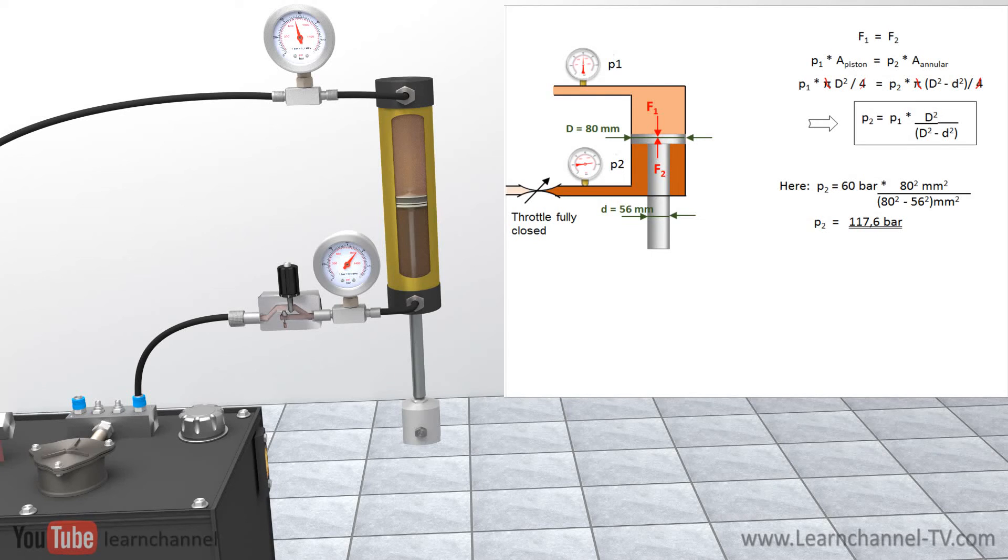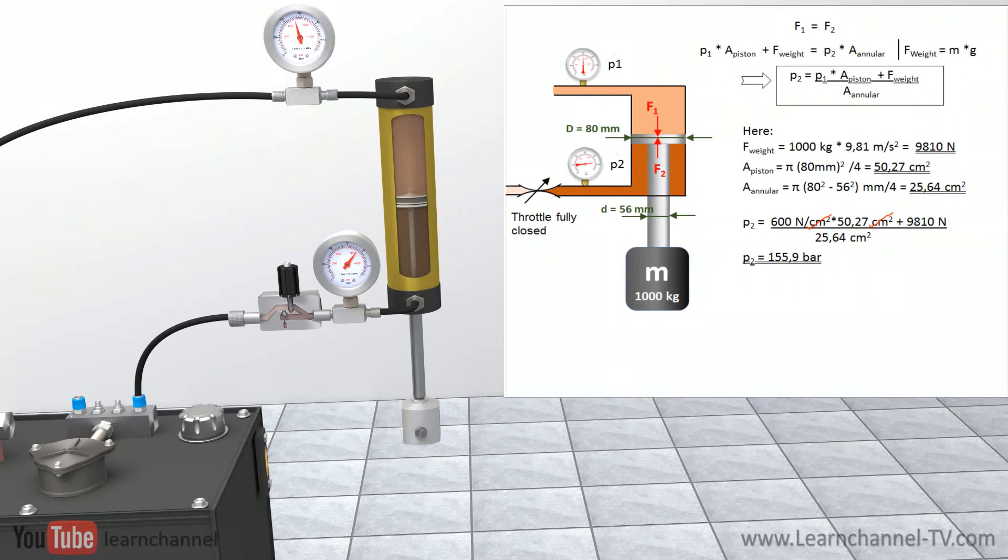Because the ring area here is much smaller than the piston area, you can get this high pressure, which can be far above the system pressure. This is a high risk and can lead to dangerous accidents. A high load even worsens this problem.